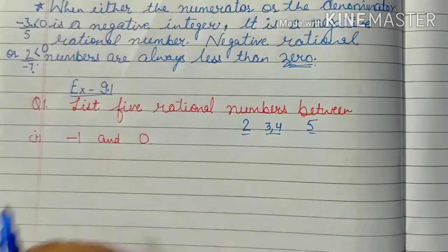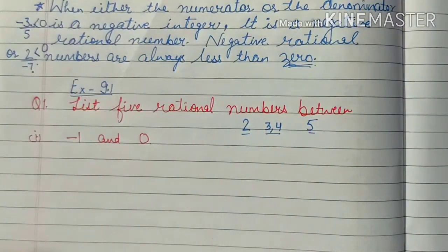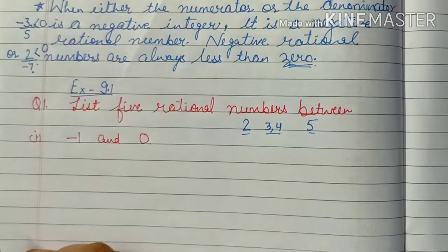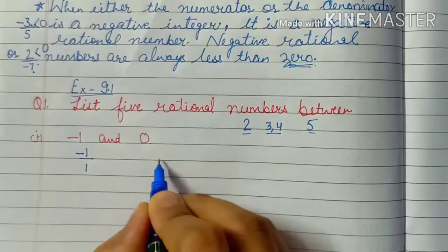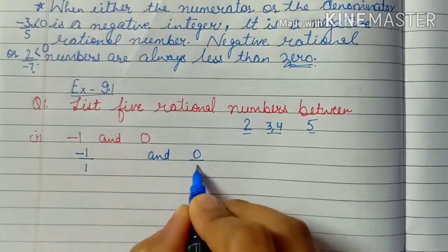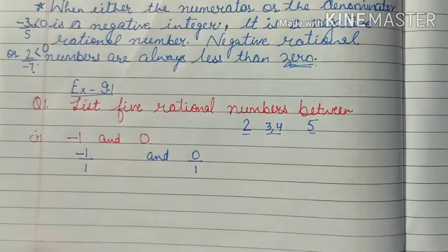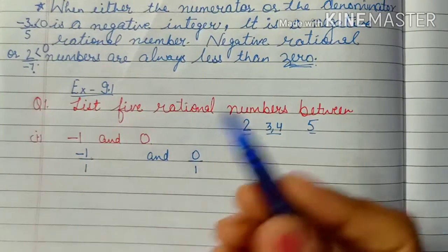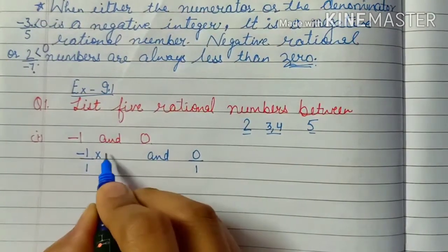So let's solve this question. We have to write 5 rational numbers between minus 1 and 0. First we write them in P upon Q form by putting 1 in the denominator: minus 1 upon 1 and 0 upon 1. Now to write rational numbers between these two numbers, we multiply by any number greater than 5 — since we need 5 numbers. Let's multiply by 6.